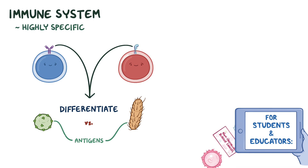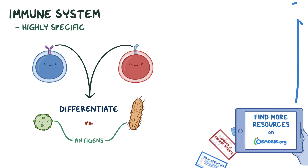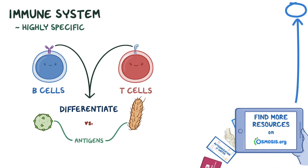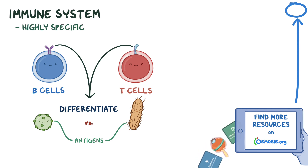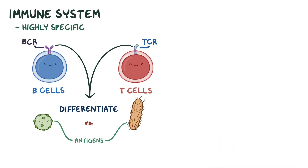The key cells of the adaptive immune response are the lymphocytes — the B and T cells — which have unique antigen receptors known as the B cell receptor, or BCR, and T cell receptor, or TCR, respectively. Both B cells and T cells undergo a process called VDJ rearrangement to generate a massively diverse set of receptors.